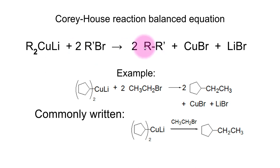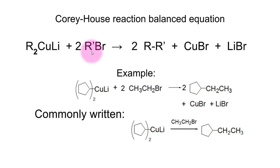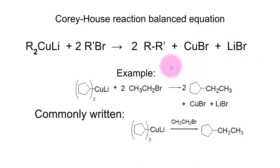In the balanced equation, the Gilman reagent reacts with two equivalents of the alkyl halide to make a compound with two R groups joined together. The byproducts are copper bromide and lithium bromide — the copper goes with one halogen, the lithium with the other — and these generally just disappear by filtration or settling.